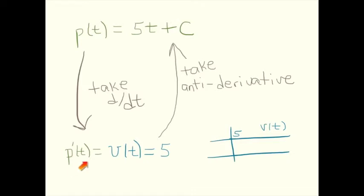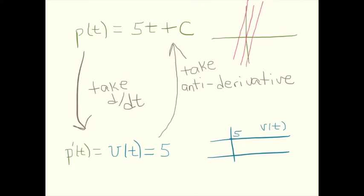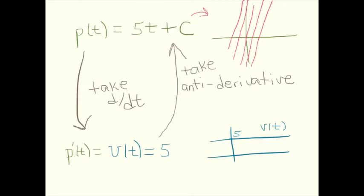Let's think about what this means in terms of slope. If the derivative of the position function is equal to 5, that means the slopes on the position graph are all equal to 5. So let's look at some potential position graphs. Here are lines with slope 5 — all of them have slope 5. Each one corresponds to a different C value. The one in the middle looks like C equals 0, which is the graph of 5t. The next one above looks like 5t plus 2, and down below we've got something like 5t minus 2.